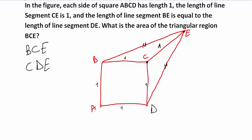Since both triangles are congruent, they have equal angles. So this angle here is equal to this angle here. CE is common, BE equals DE, and BC equals CD equals 1 — so both triangles are equal and have equal angles. This means CE is a bisectrix of angle BED.